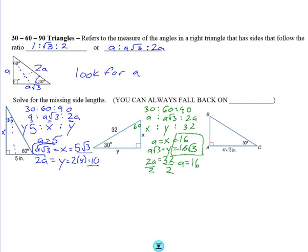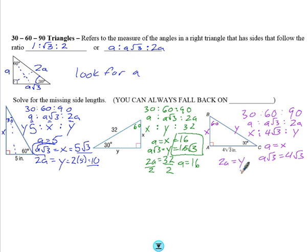The last one we'll look at: 30, 60, 90, A, A root 3, 2A. Across from 30, let's call it x. Across from 60 is 4 square root of 3. Across from 90 is y. Our three little equations are A equals x, A square root of 3 equals 4 square root of 3, and 2A equals y. Where we can solve for A is right here.